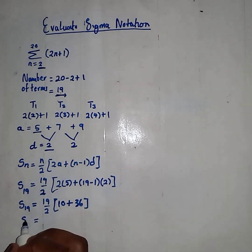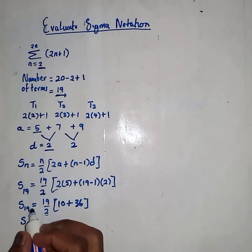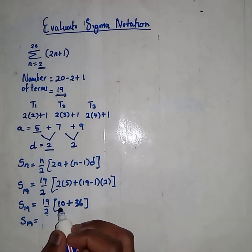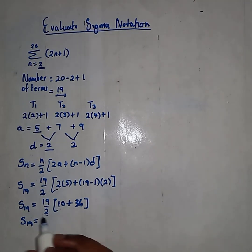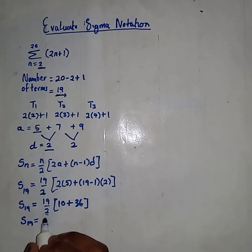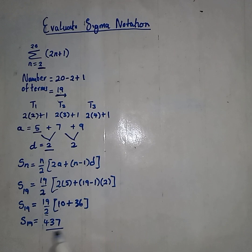We can take out our calculator and figure this out: 19 over 2, open bracket, giving us 47. And we have evaluated our sigma notation. S19 = 437.